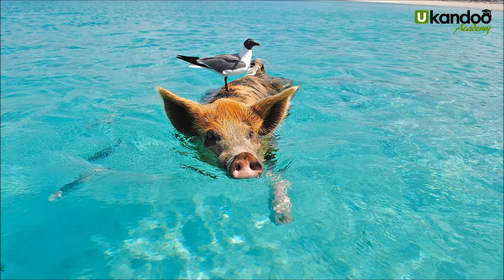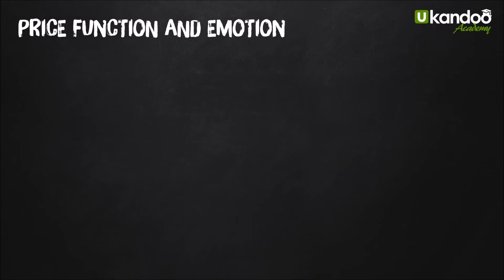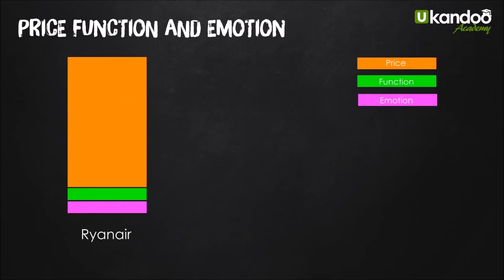You have to swim against the tide and do something different to create your brand. Here's a nice simple example in the airline market in Europe. In any market, any brand, you can break it down into three separate sections: price, function, and emotion. Ryanair are all about price — like Southwest, they are just all about being the cheapest in the market.